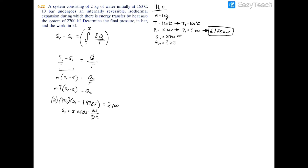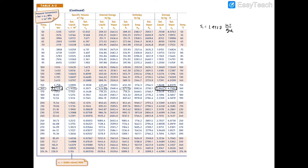Next, we find the work using the first law of thermodynamics: W = Q - ΔU, which expands to W₁₂ = Q - m(u2 - u1). We need the internal energies from the property tables. State 1 is a compressed liquid, so we approximate u1 using the saturated liquid value uf at 160°C: u1 ≈ 674.86 kJ/kg. For u2 we need the quality of the two-phase mixture.